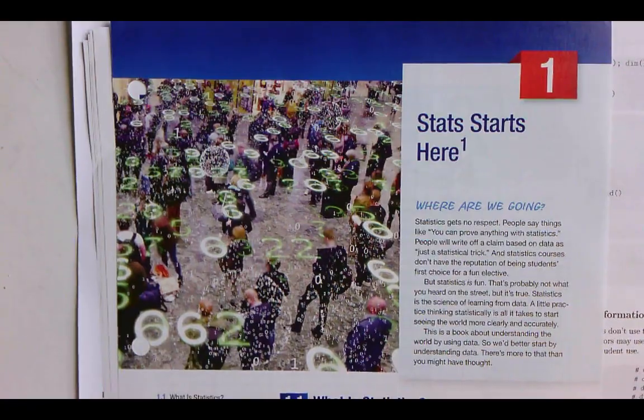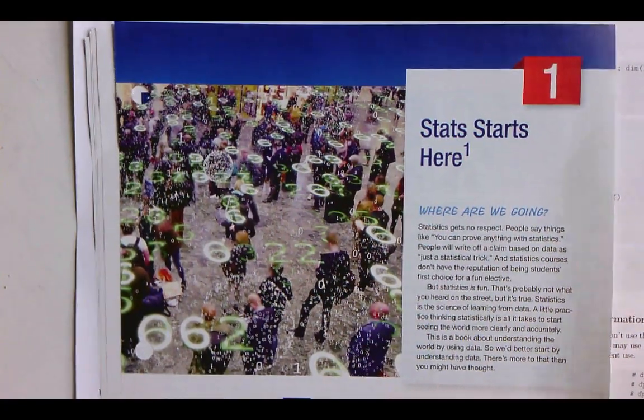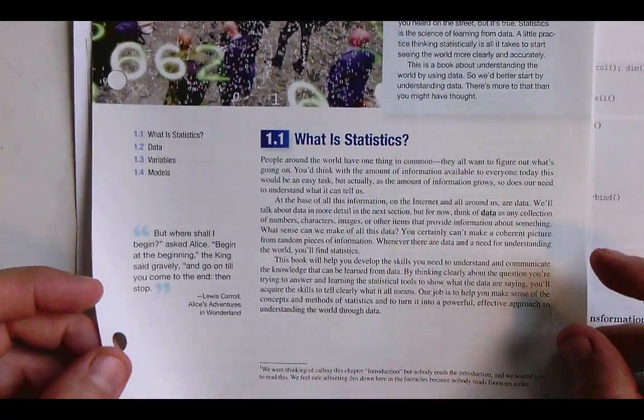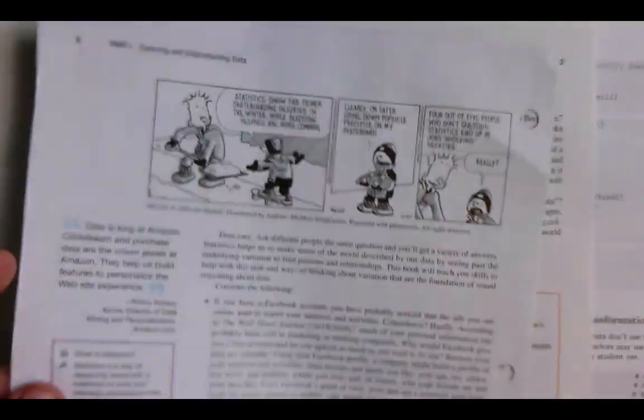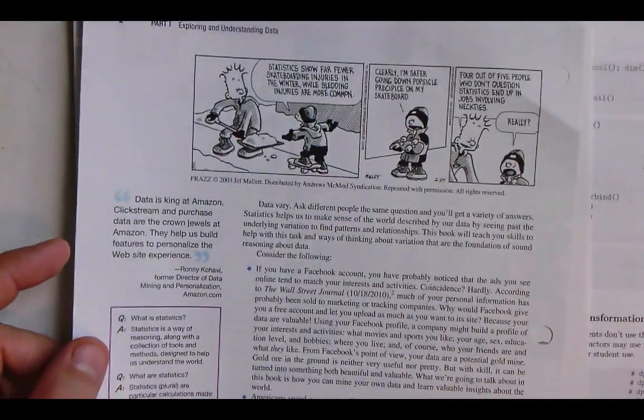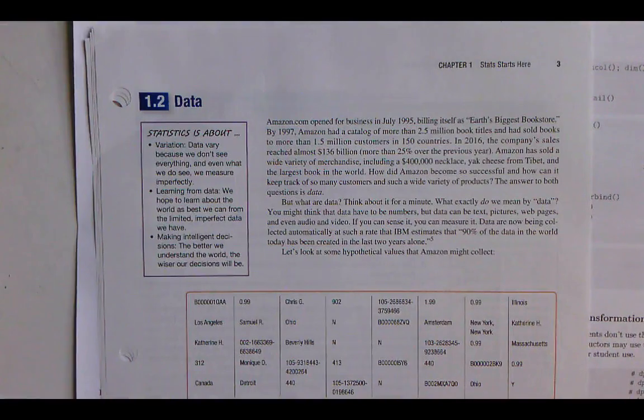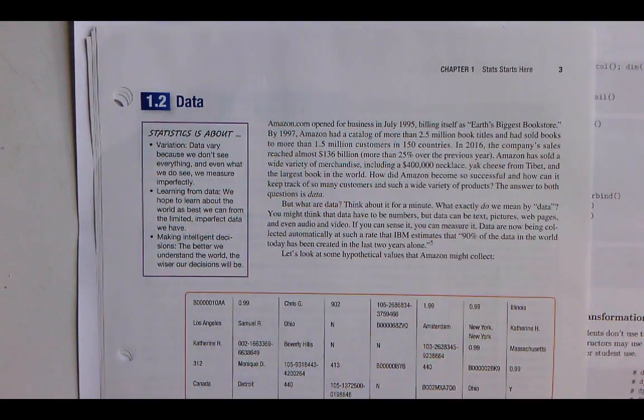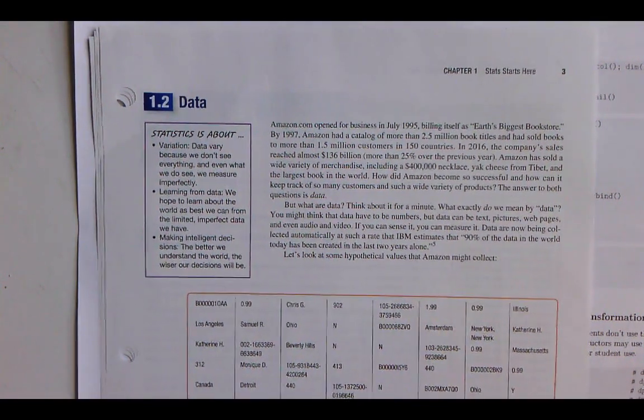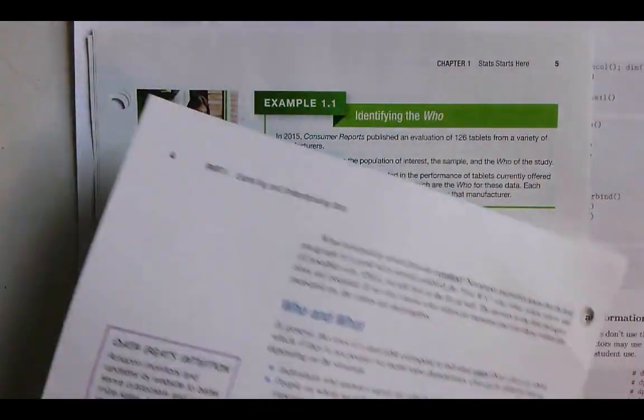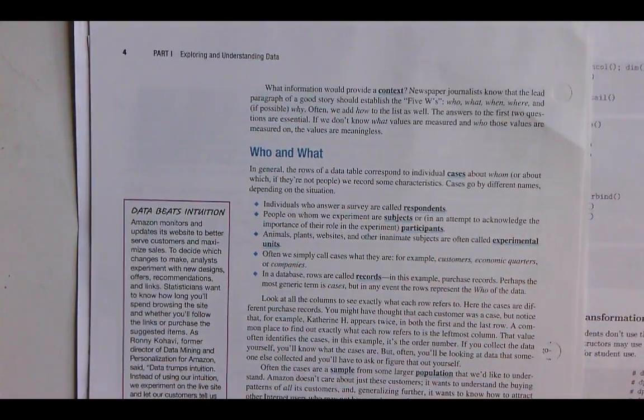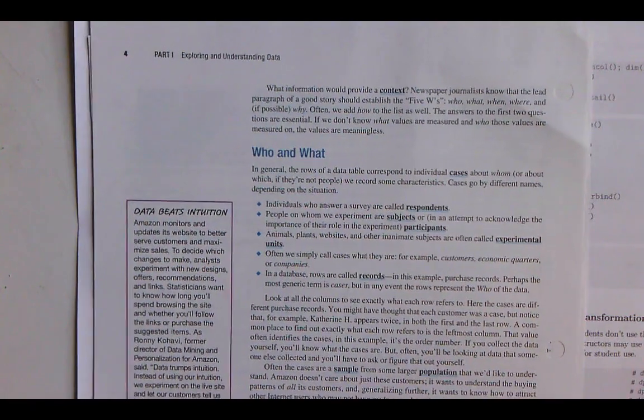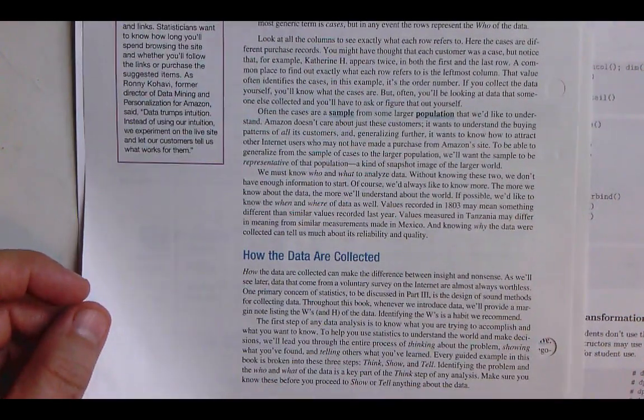Where are we going? This is an overview chapter that really defines what is statistics, brings together some examples in terms of Facebook and smartphones, defines for the first time data, these ideas of observations and rows, brings in questions about who and what we're going to be studying and how we collect data.